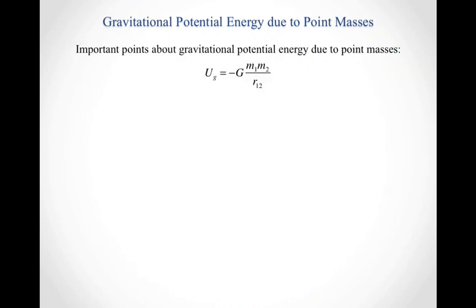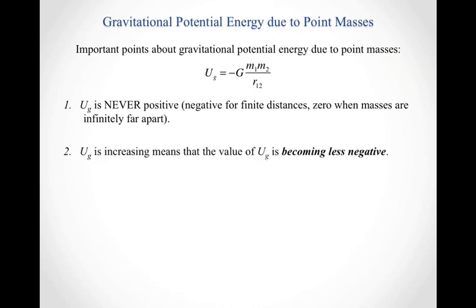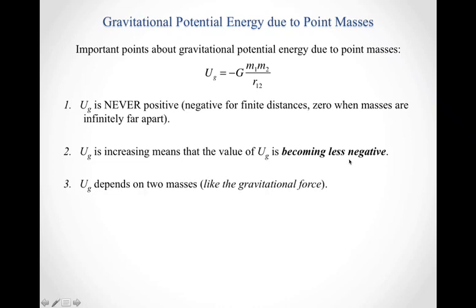Some important points when working with this equation: the gravitational potential energy is never positive — it's negative for finite distances and zero when the masses are infinitely far apart. By increasing the gravitational potential energy as you move masses apart, the value of U_G is simply becoming less negative, moving back towards zero. Also, the gravitational potential energy depends on two masses, just like the gravitational force did.